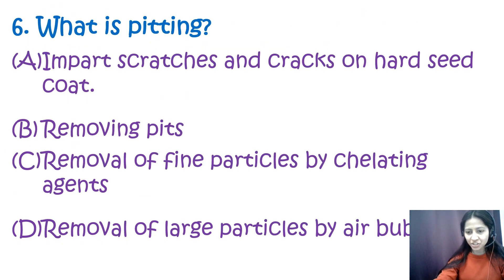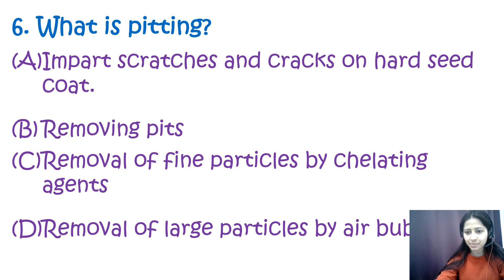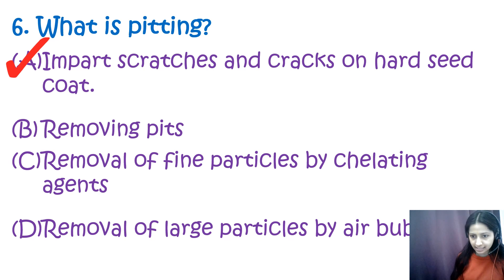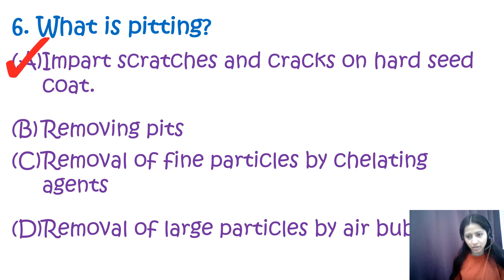Question 6: What is pitting? Options are: impart scratches and cracks on hard seed coats, removing pits, removal of fine particles by gelating agents, or removal of large particles by air bubbles. The correct option is A — pitting is a method used to impart cracks, scratches, or dents on hard seed coats to enable easy migration of oil and water between the husk and the cotyledon.